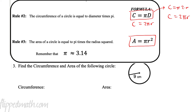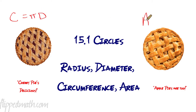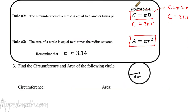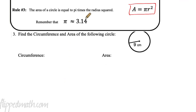Here's an easy way to remember these formulas. Cherry pie is delicious — that's circumference equals pi times diameter. Apple pies are too — that's area equals pi r squared. Cherry pie is delicious and apple pies are too. Remember that pi is approximately equal to 3.14.